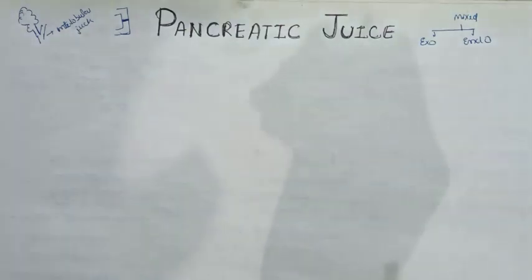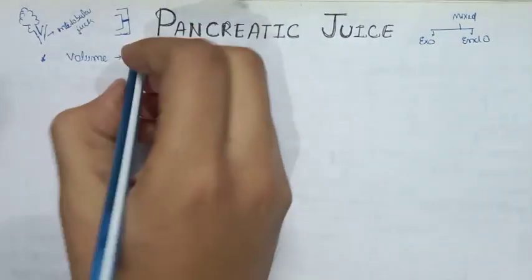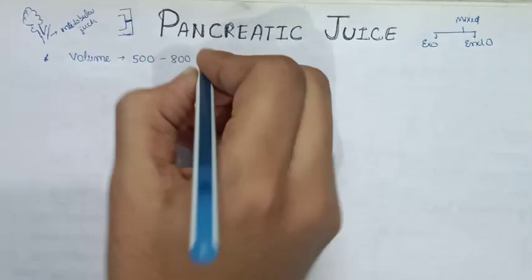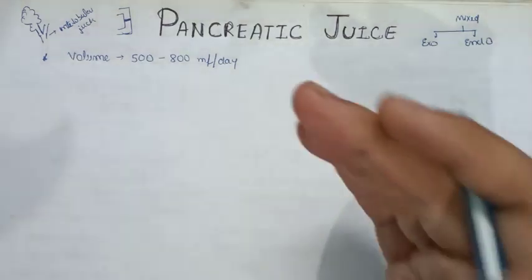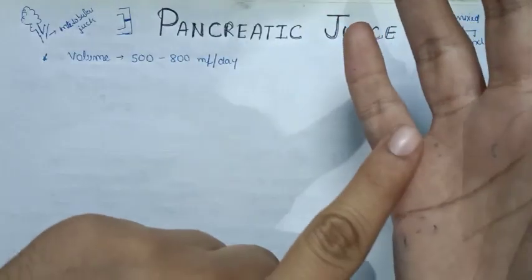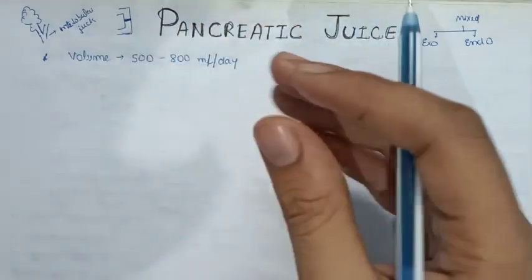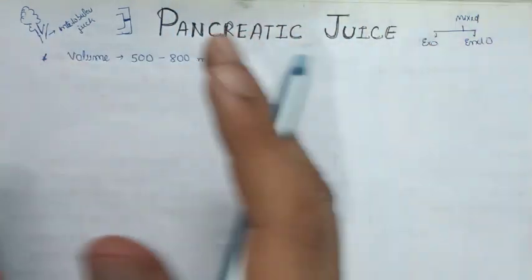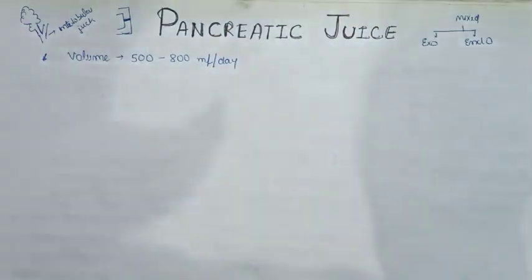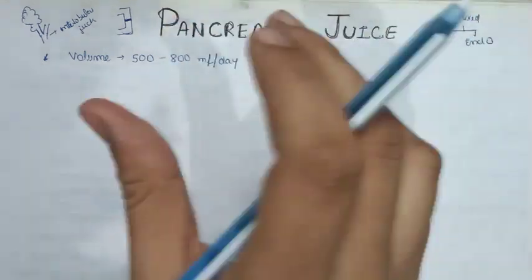The volume of pancreatic juice secreted per day is 500 to 800 ml. For comparison, bile juice ranges from 800 to 1200 ml per day. It helps to remember these in sequence: 500–800 for pancreatic juice and 800–1200 for bile juice.